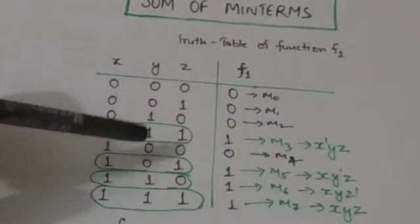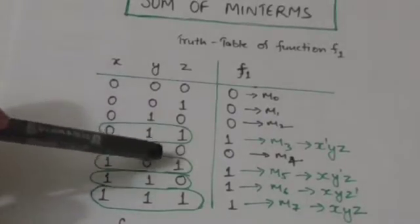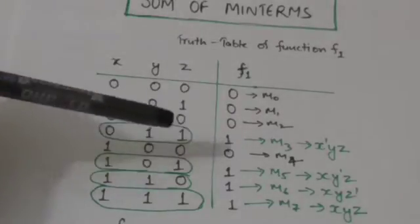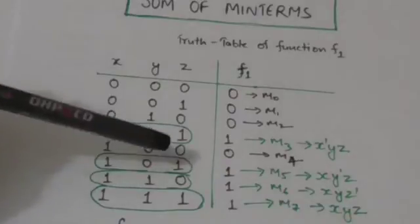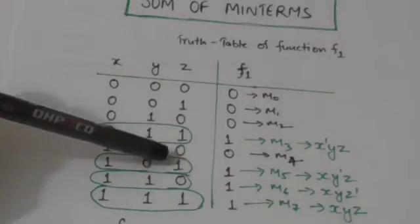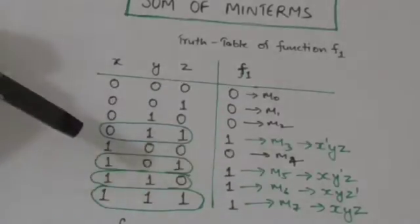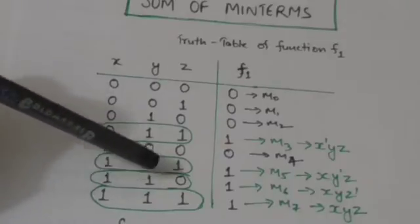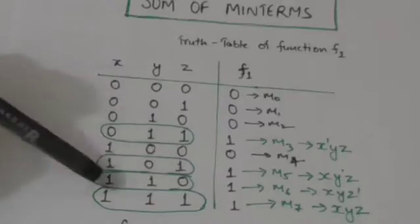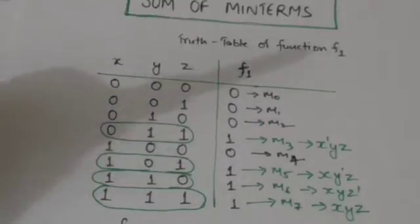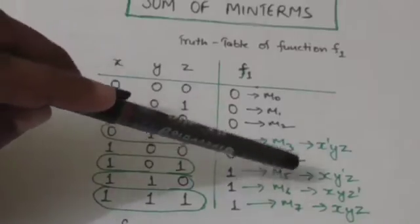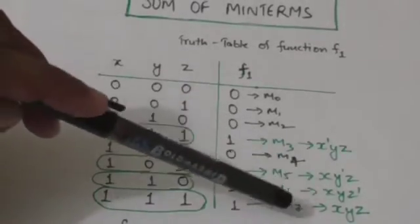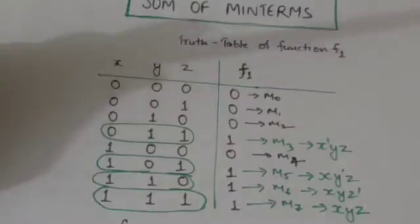Similarly, the decimal value of the next binary number is 5, so the minterm corresponding to it is m5. The decimal value of the next binary number is 6, so the minterm is m6. The decimal value of the last binary number is 7, so the minterm is m7.